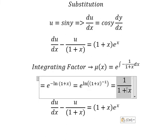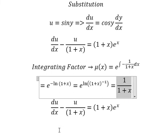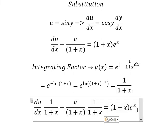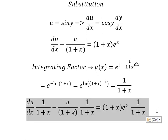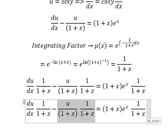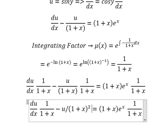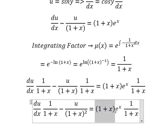That means we need to multiply both sides by 1 over 1 plus x. So this one we have u over 1 plus x as well. This one we simplify, 1 plus x on numerator and denominator.